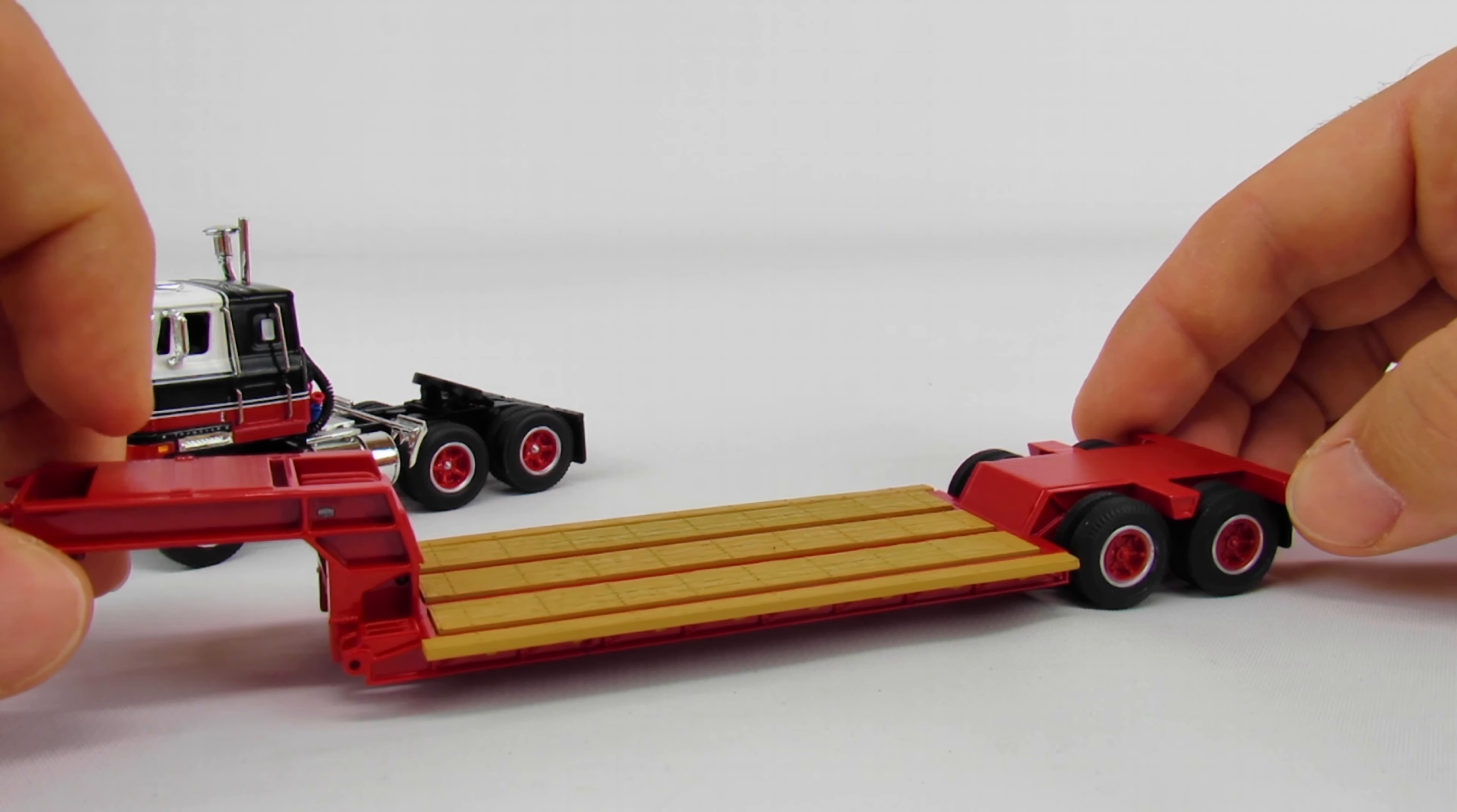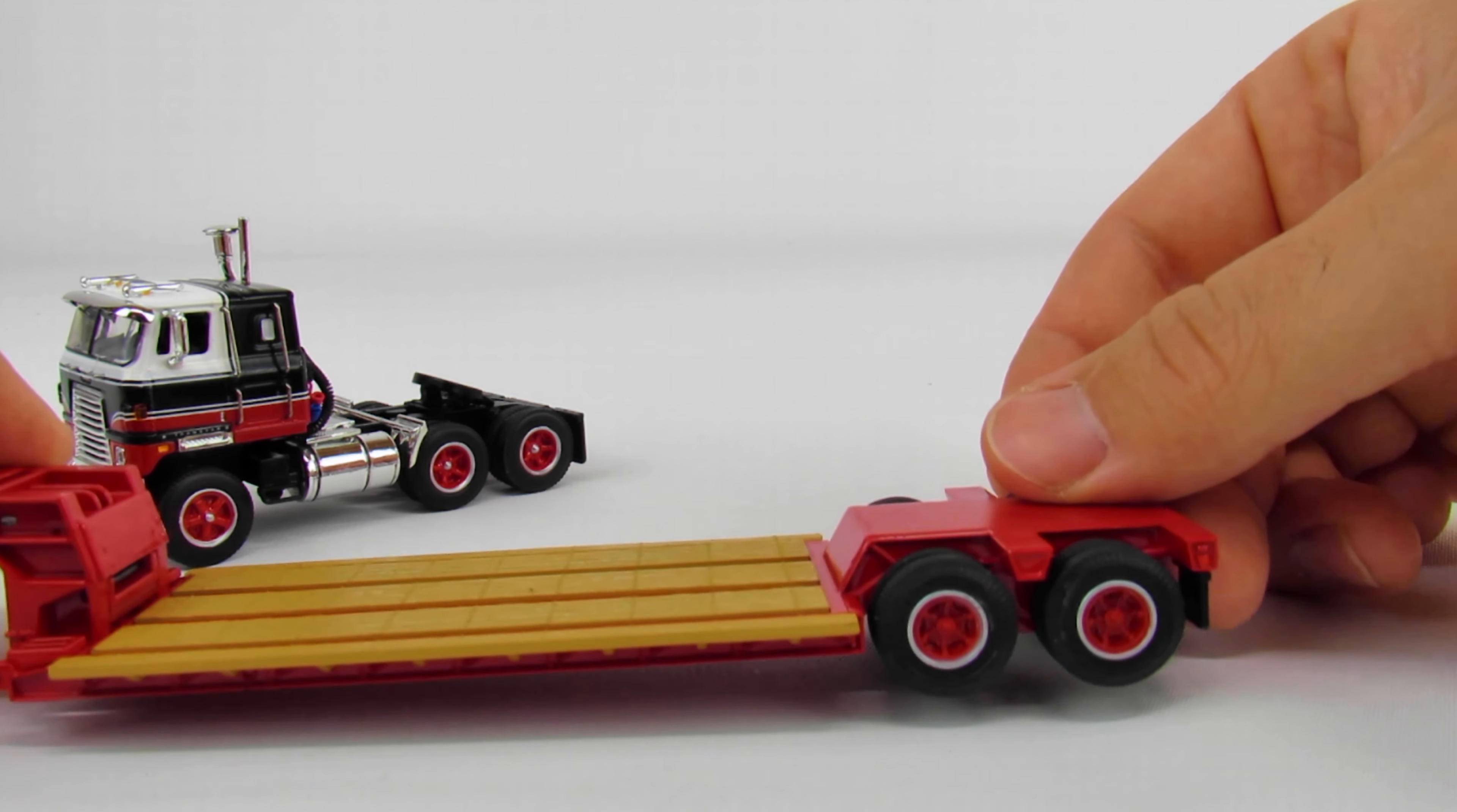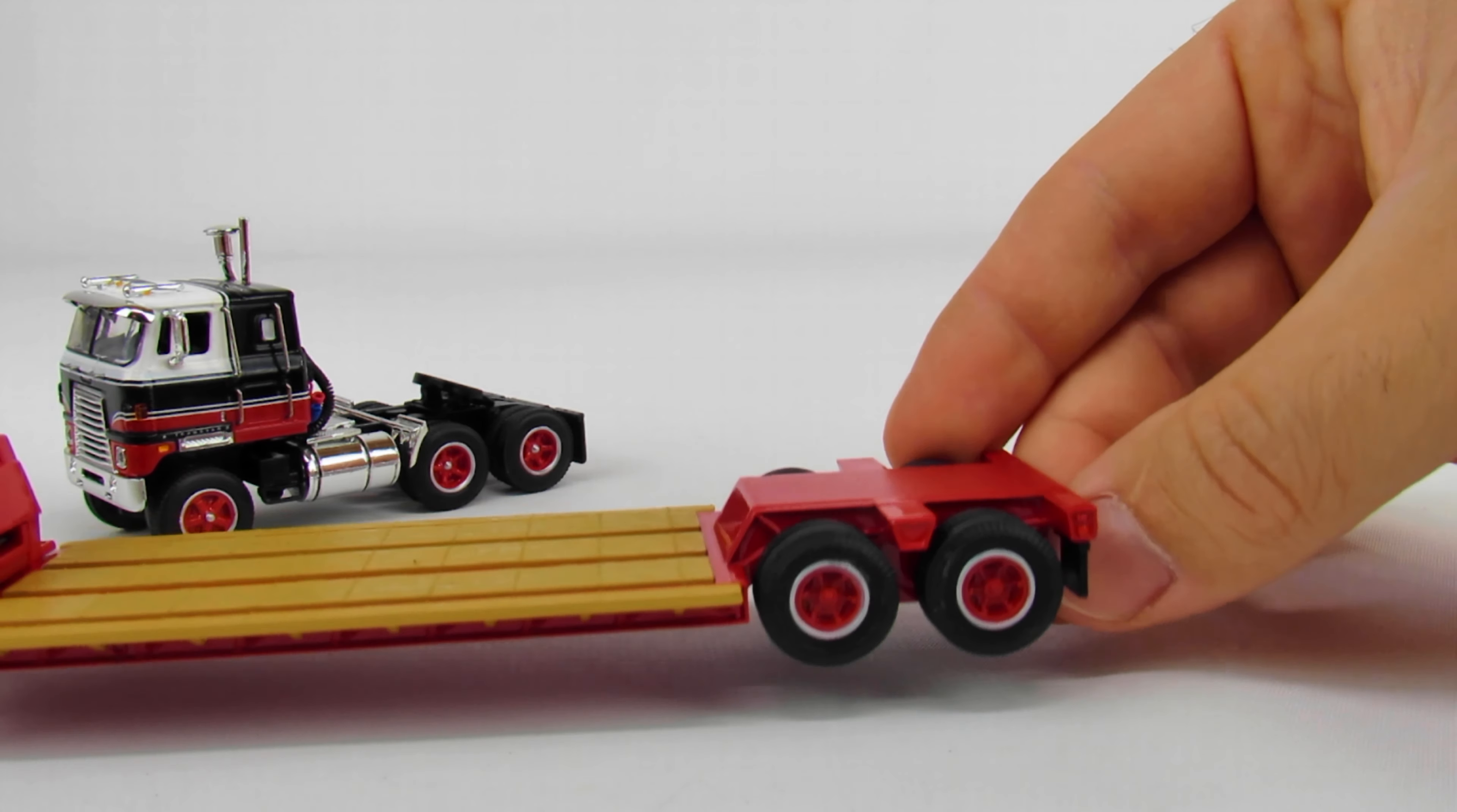This one you'll notice has the outriggers out and they are fixed in position - they're not coming off, which is okay, not great but okay. You can see the trailer has a little bit of suspension and matching wheels for the tractor, which is cool.